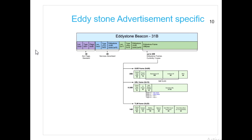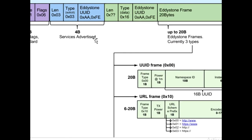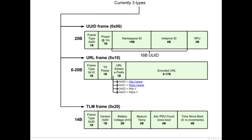The frame is categorized into three types. For Eddystone UID: the UUID represents a namespace or instance ID. It has one byte for the frame type, one byte for TX power, 10 bytes for the namespace, and 6 bytes for the instance. For Eddystone URL: we have frame type, TX power, then a URL scheme like HTTP or HTTPS, followed by the URL data itself.